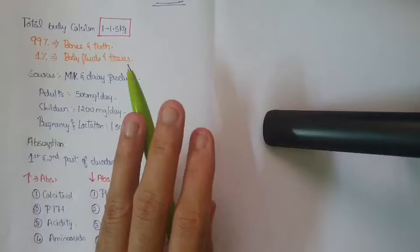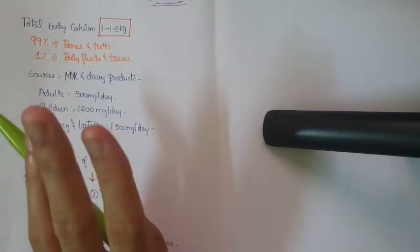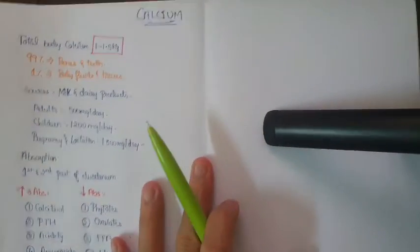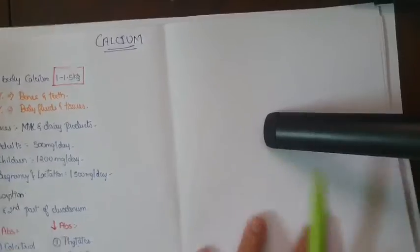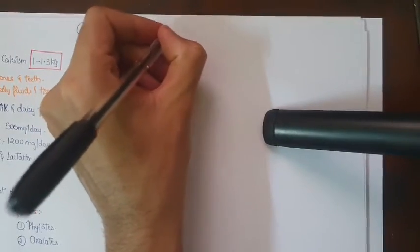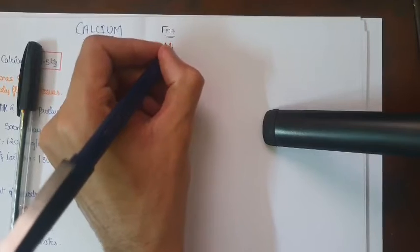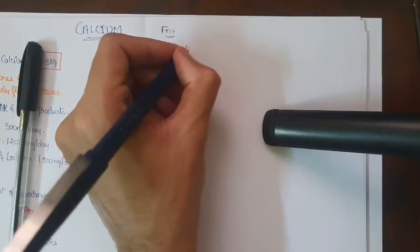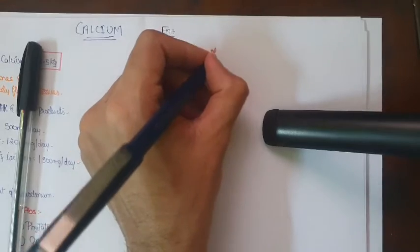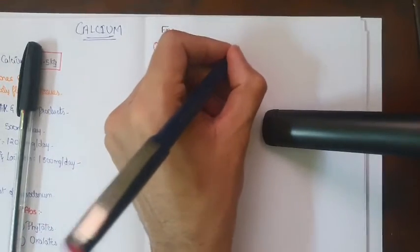The most important five-mark question they are going to ask is: what are the biochemical functions of calcium? The first function is going to help in the mineralization of bone and teeth.